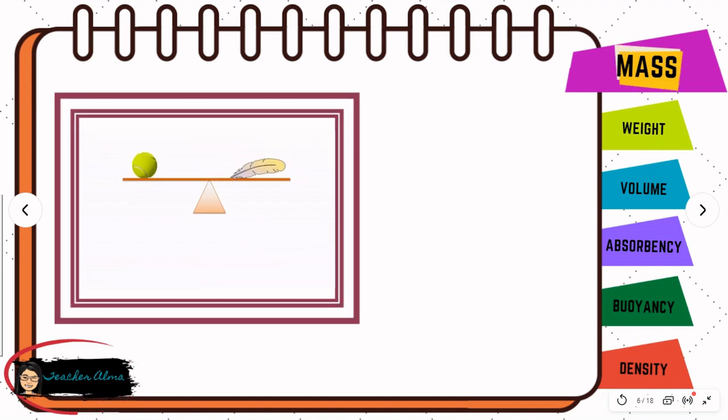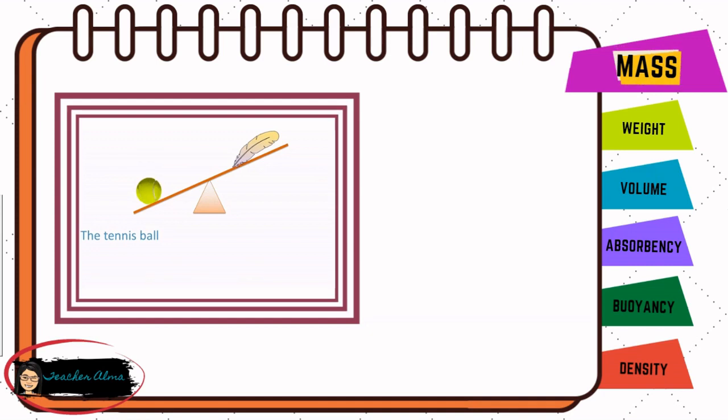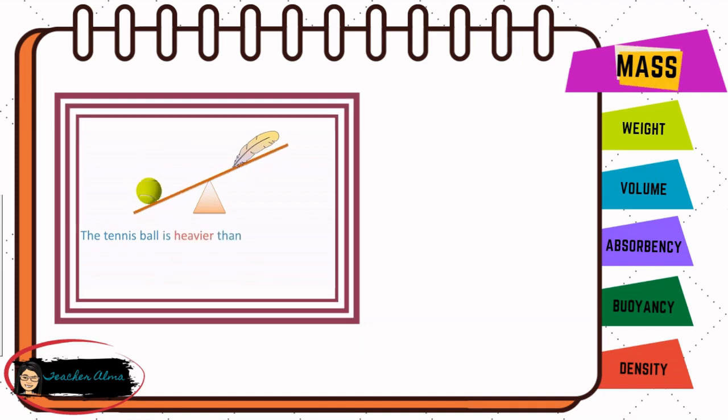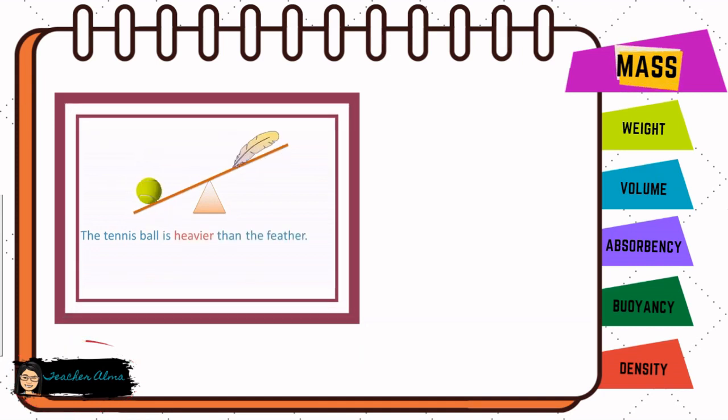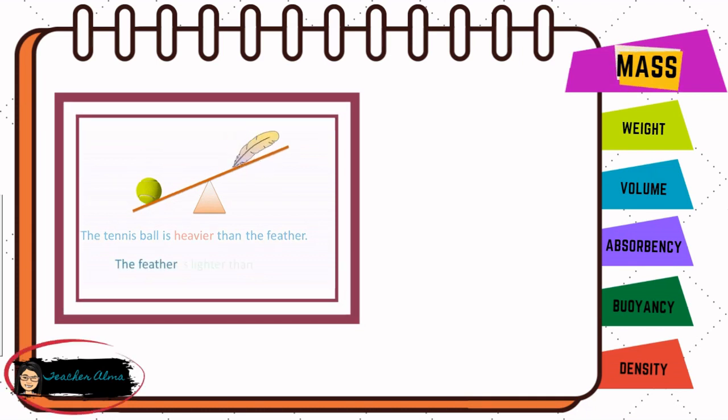Let us take a look at this example. The tennis ball is heavier than the feather. The feather is lighter than the tennis ball.